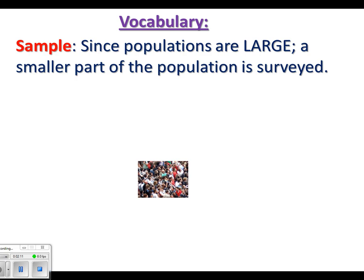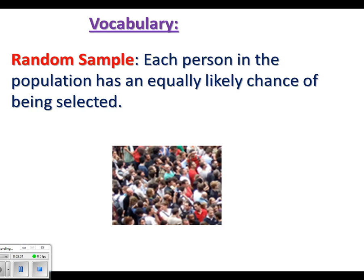You want to take a smaller part of the population. If you want to know what sixth graders think, you could ask all 200 sixth graders, but that might take a lot of time. Maybe you can just do a random sampling of people in the hallway — and that's kind of what I'm getting to next, which is a random sample.